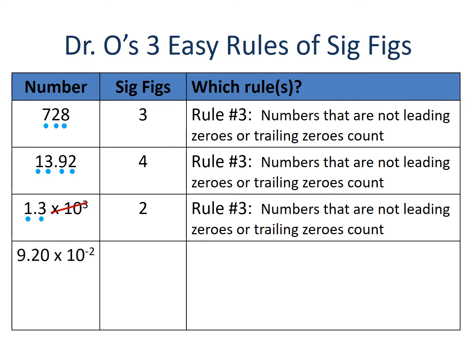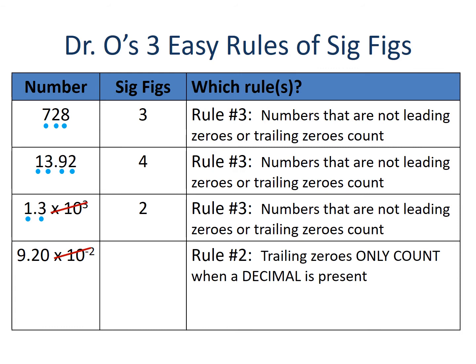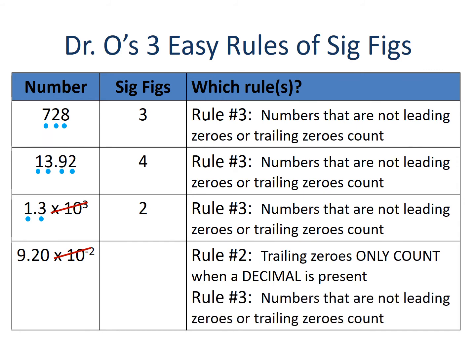Here we have 9.20 × 10⁻². We disregard the exponent, leaving us with 9.20. We have a trailing zero — rule number two says trailing zeros only count when a decimal is present. We have a decimal between the 9 and the 2, so that trailing zero is now important. Applying rules two and three, the 9, the 2, and that 0 are our important digits — 9.20 × 10⁻² has three significant figures.